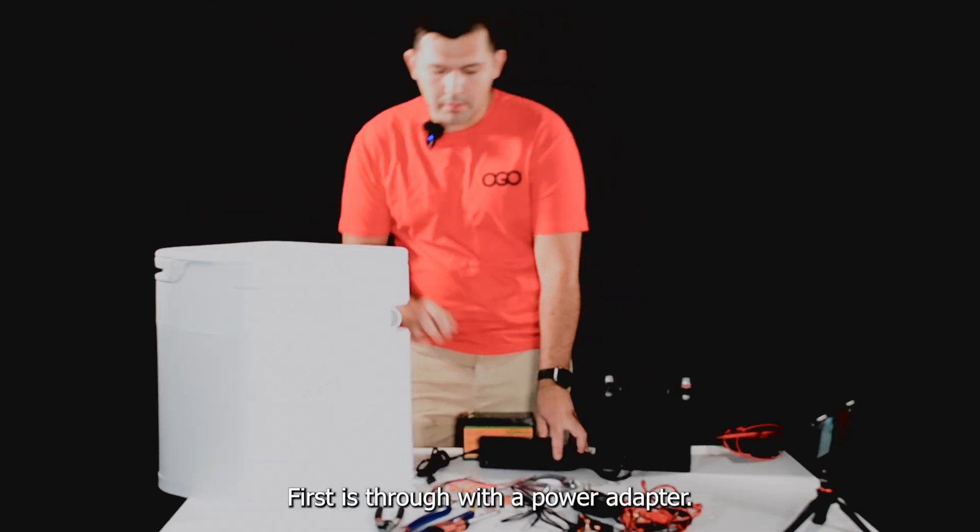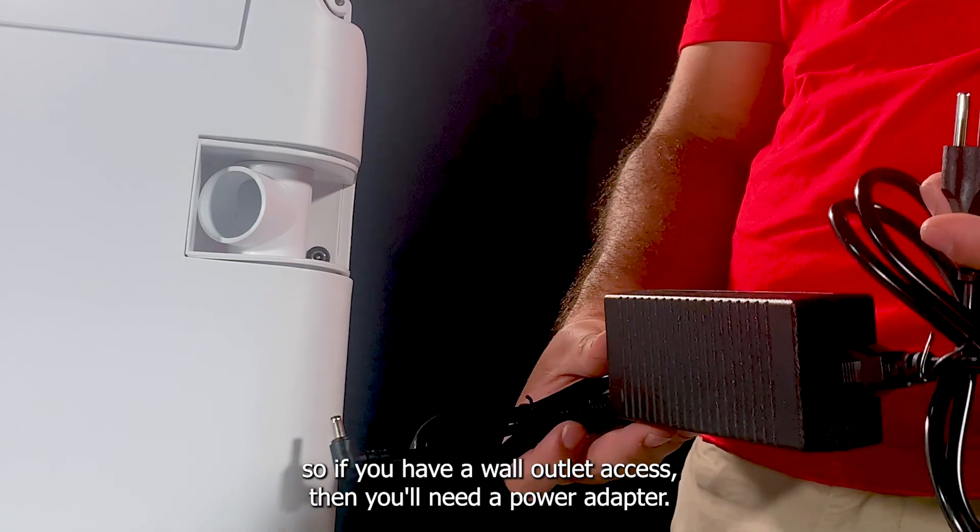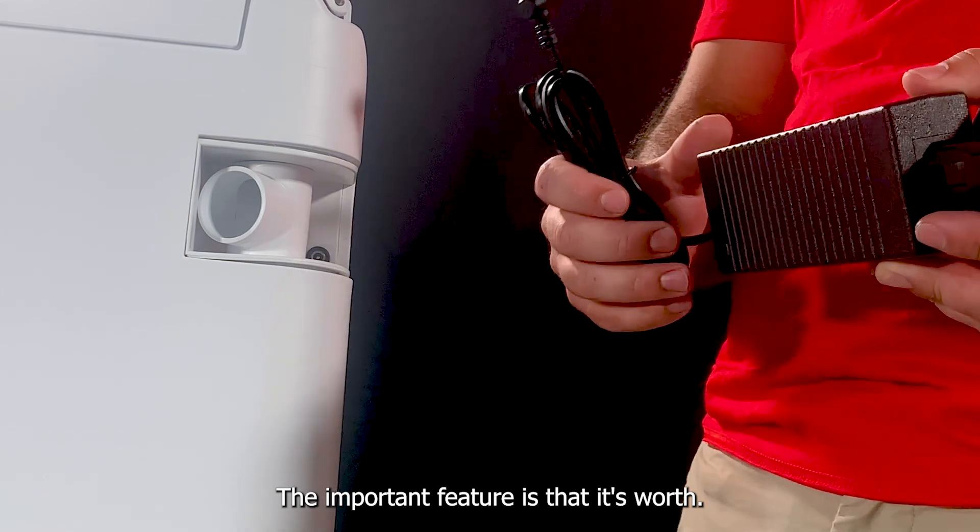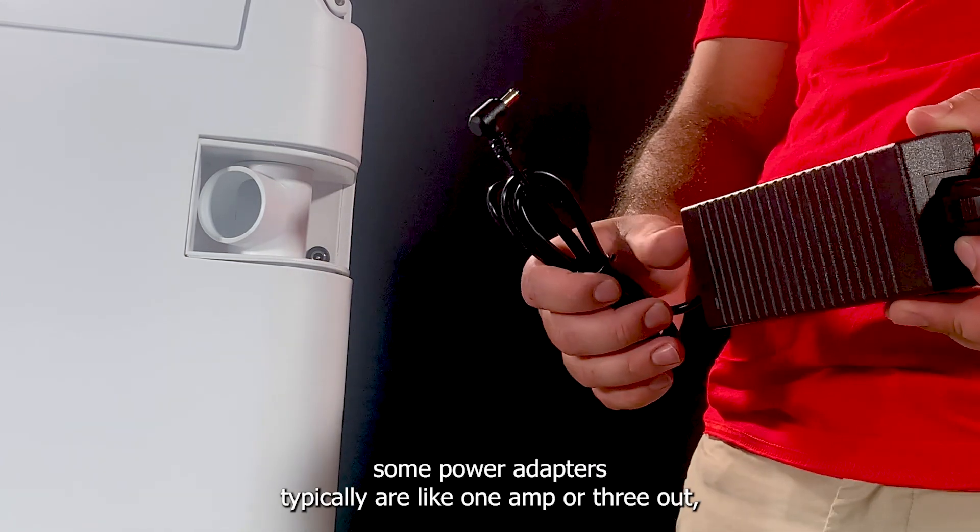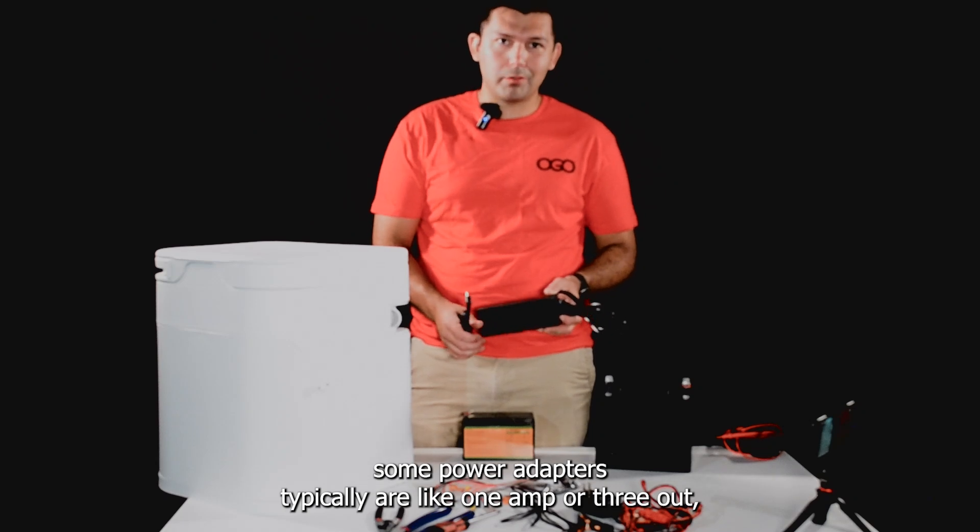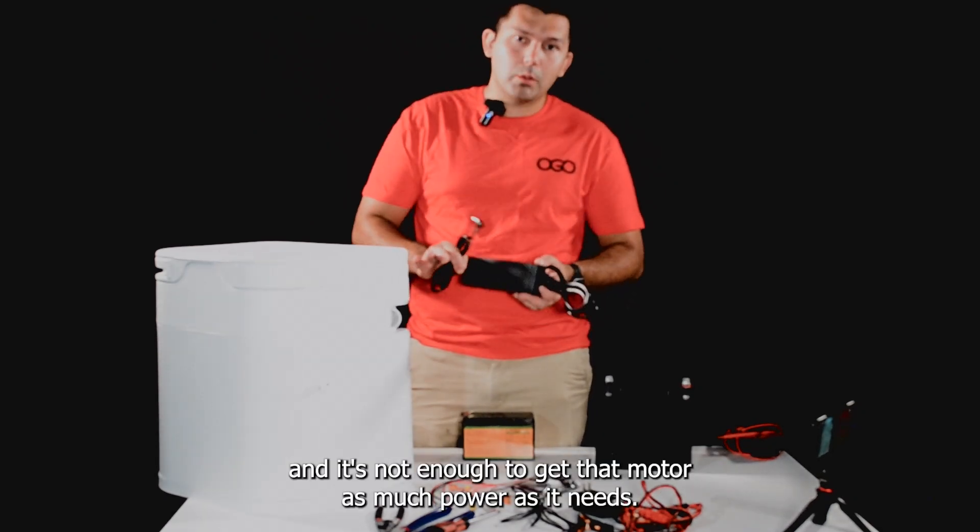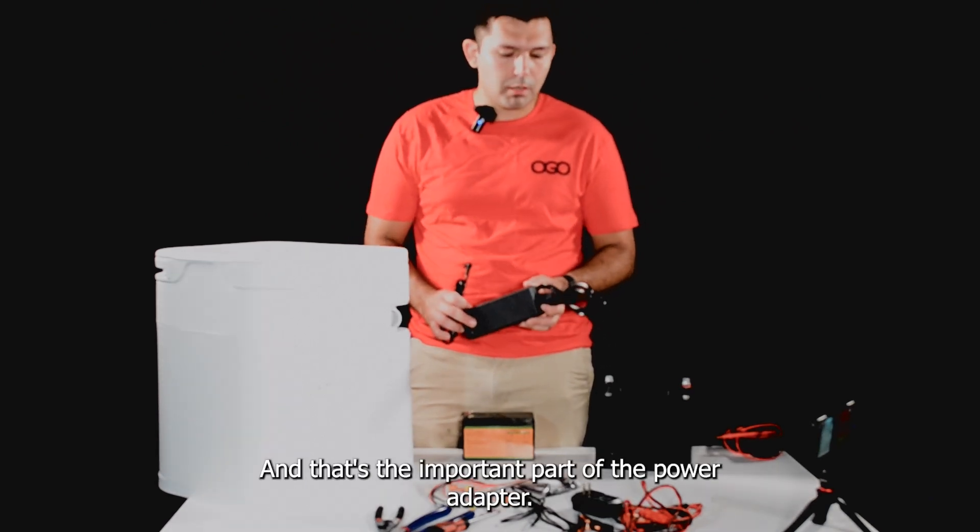First is with a power adapter. If you have wall outlet access, you'll need a power adapter. We do sell one on our website. The important feature is that it's rated for 10 amps of current. Some power adapters typically are like one amp or three amps, and it's not enough to get that motor as much power as it needs. So 10 amps, 12 volts is the output. That's the important part of a power adapter.